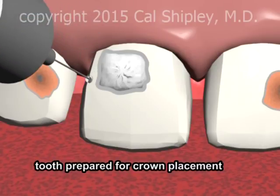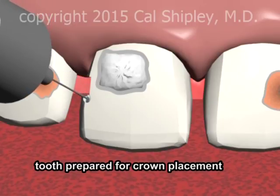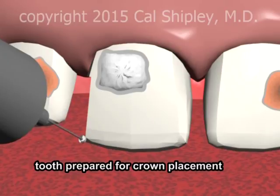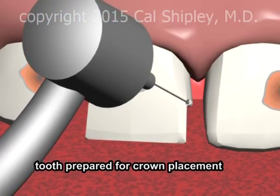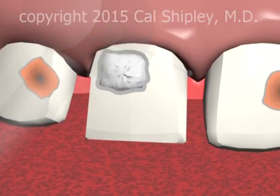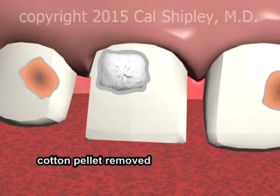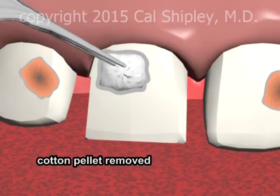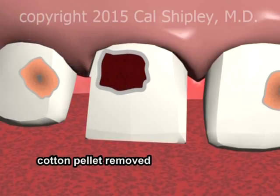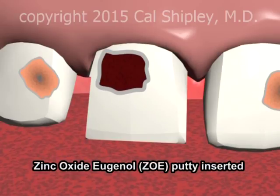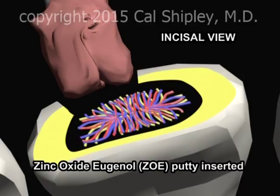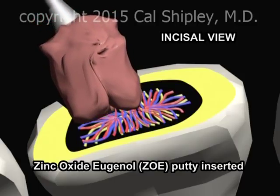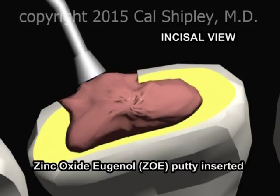The cotton pellet is left in the pulp chamber for several minutes, while the tooth is prepared for crown placement. The cotton pellet is then removed, and zinc oxide eugenol putty, also known as ZOE putty, is inserted to fill and seal the chamber. In addition to being a good sealant, ZOE putty has both anesthetic and antiseptic properties.